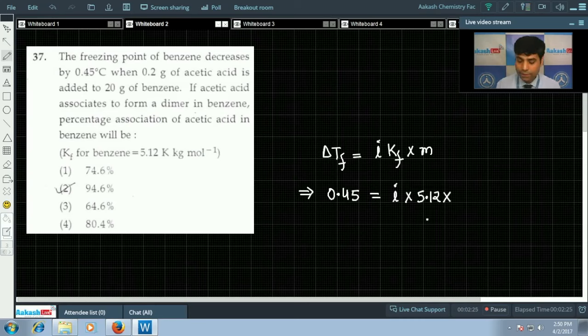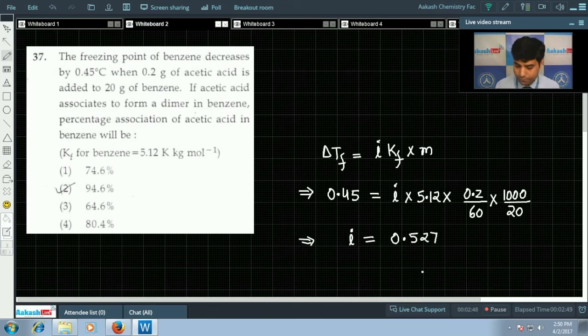Multiply by molality, which is weight of solute 0.2 gram, molar mass of solute is 60 gram per mole because it is acetic acid, multiply by 1000 divided by weight of solvent in gram. We can solve this equation to get the value of i, and the value of i is 0.527.